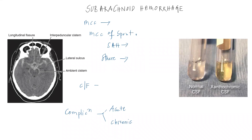Subarachnoid hemorrhage means bleeding into the subarachnoid space. As you can see in this CT scan, you can appreciate that the subarachnoid spaces are filled with blood, that's why it appears hyperdense.